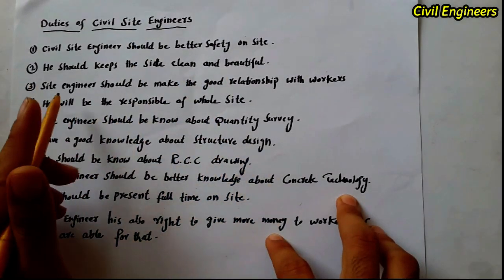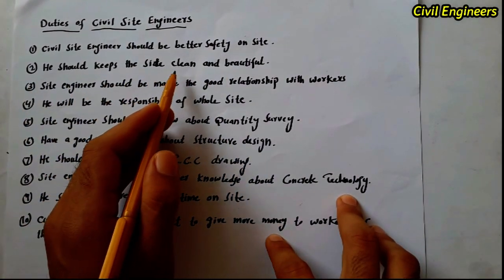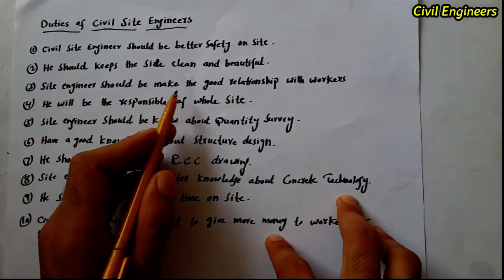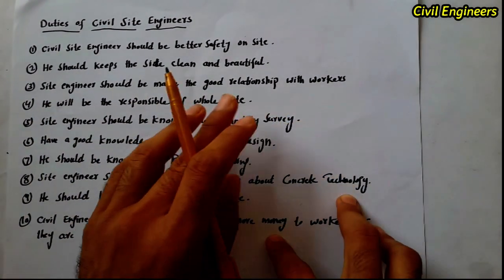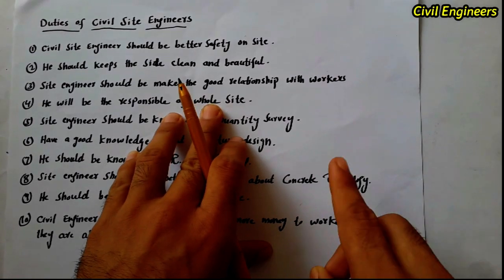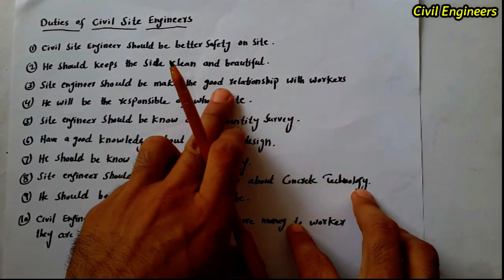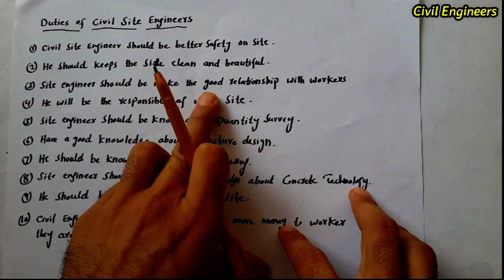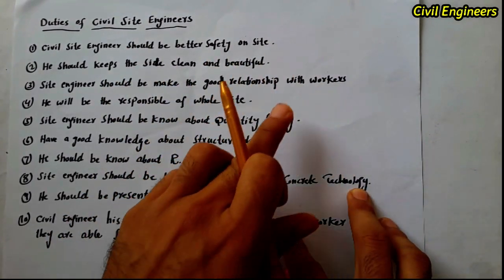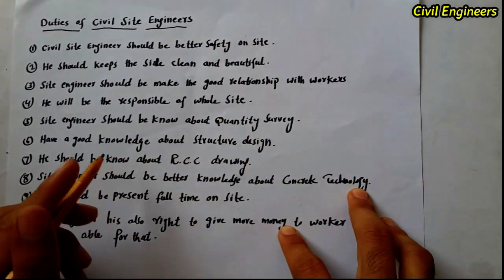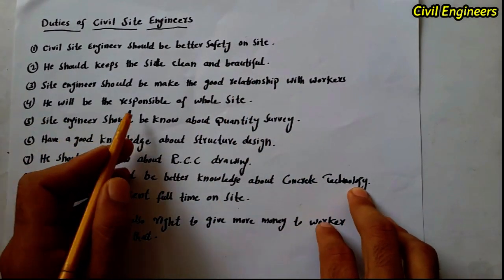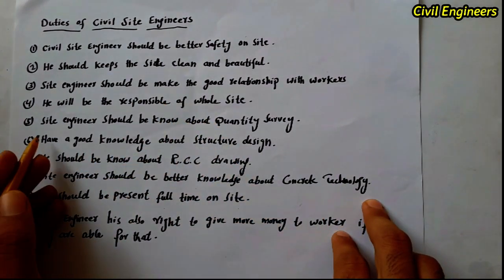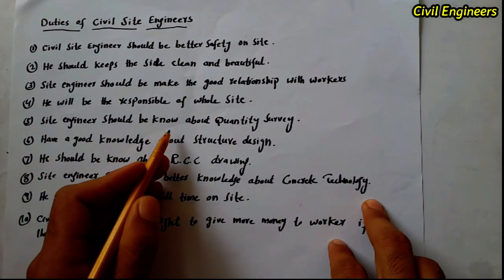Third: the site engineer should maintain a good relationship with workers. If the site engineer doesn't have a good relationship with the workers, he will not be able to complete his work properly. He must maintain good relations with all workers on site. Fourth: he will be responsible for all site activities.